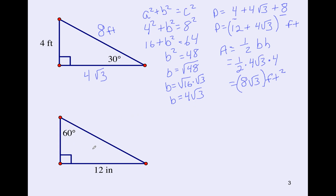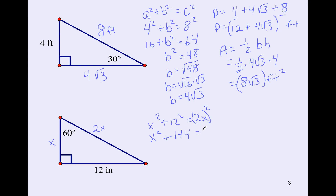Now pause the video and see if you can find the missing sides on this right triangle the same way we did in the previous lesson. Remember, the hypotenuse is twice as big as the shortest side. We use the Pythagorean theorem: x squared plus 12 squared equals (2x) squared. This gives x squared plus 144 equals 4x squared. Subtract x squared from both sides, then divide both sides by 3, giving x squared equals 48.